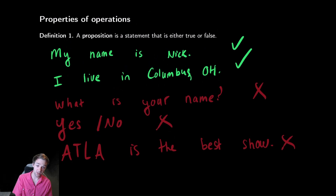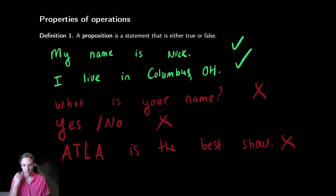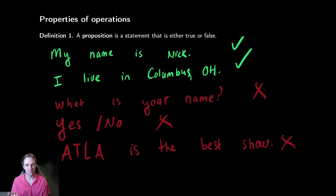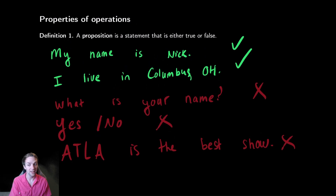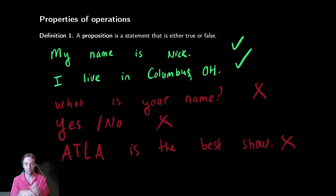So a proposition is something that is true or false. And the main things that are not propositions are questions, affirmations — things like yes, no — or even commands, like 'fetch me that thing.' That's not a true or false statement; it's just a request. And things like opinions — those are the most common things that are not propositions.